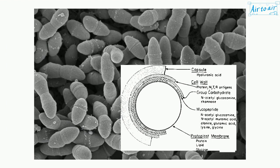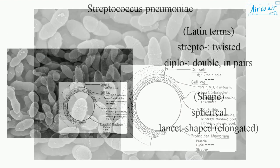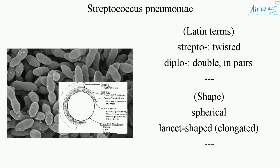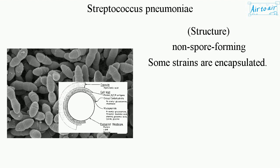From Latin terms: 'strepto' means twisted, 'diplo' means double — found in pairs. Its shape is spherical and lancet-shaped, elongated in structure, non-spore-forming, and some strains are encapsulated.